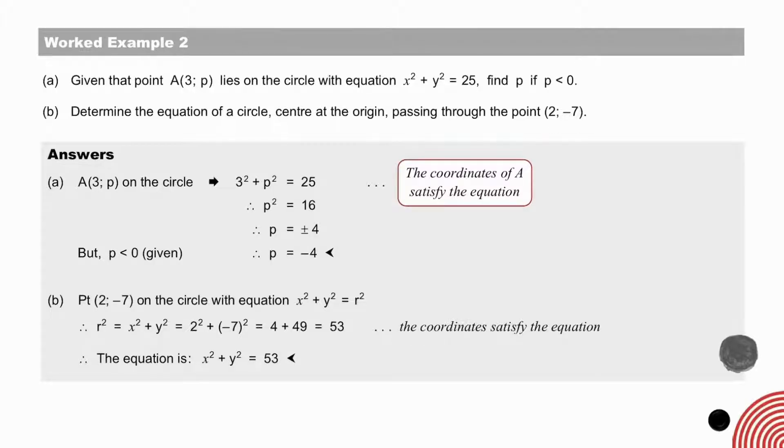Pause to check your answers. What do we know if a point lies on a graph? We know that it satisfies the equation, so we substitute. And in A, we substitute the coordinates 3 and P, in the equation, and we get P equal to plus or minus 4. But P is negative, we were given, so only P equals minus 4.